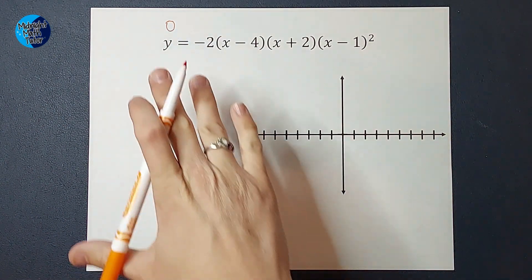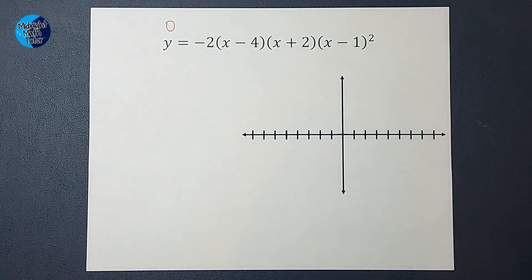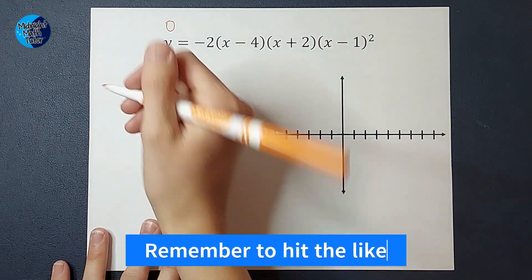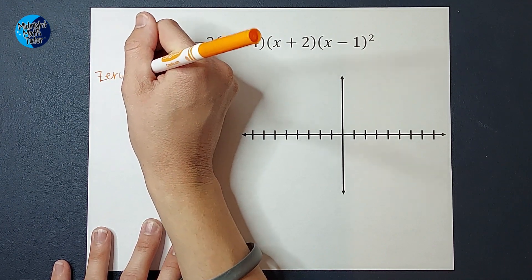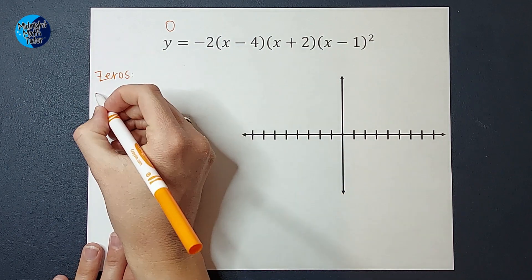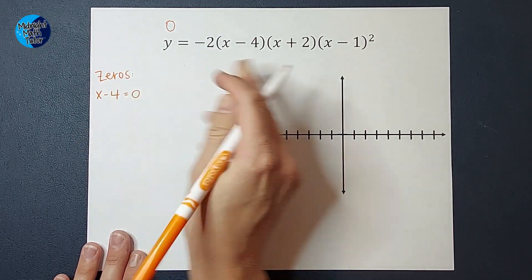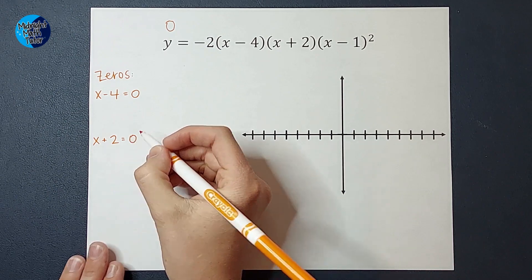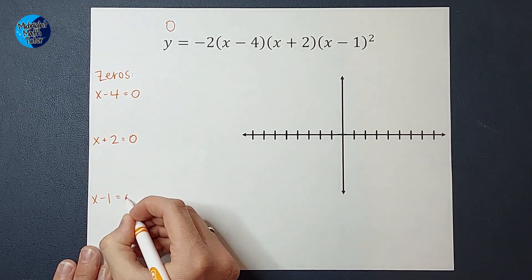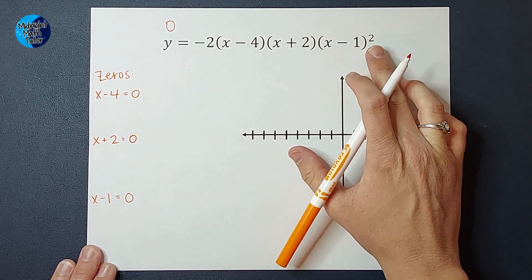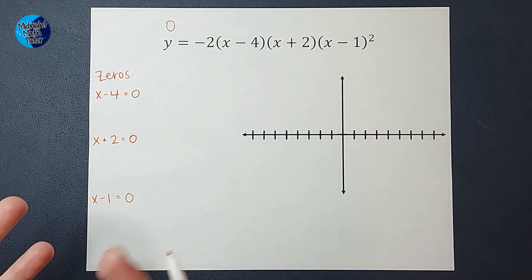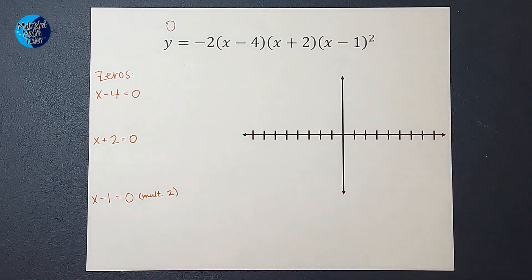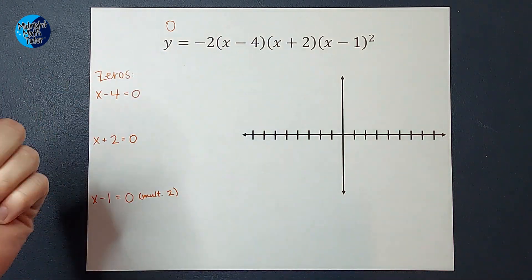When we do that, we end up setting each parenthesis equal to zero. I could set negative 2 equal to zero, but that's not true, so we don't need to worry about that. So we're going to set x minus 4 equal to zero, x plus 2 equal to zero, and x minus 1 equal to zero. You'll notice there are really two x minus 1s because of that squared, so I'll make a note that it has a multiplicity of 2 — that's our third step.